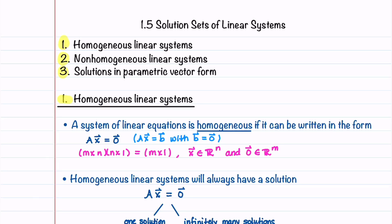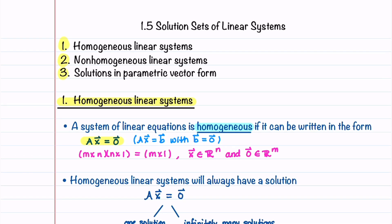We'll begin by learning all about homogeneous linear systems of equations. A system of linear equations is homogeneous if it can be written in the form A times X equals zero — this is just Ax = B with B equal to zero. A is an m by n matrix, X is an n by 1 column vector, and the right-hand side zero is an m by 1 column vector. X is an element of R^n and the right-hand side zero is an element of R^m.